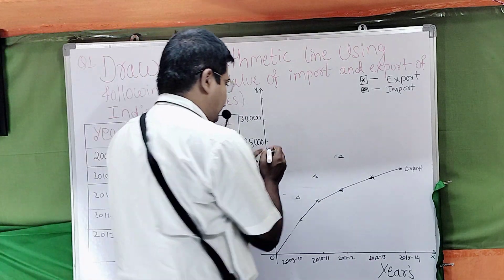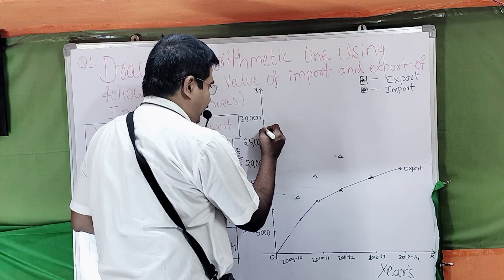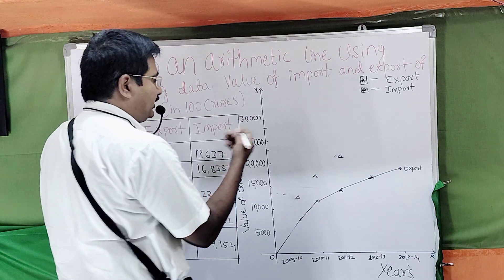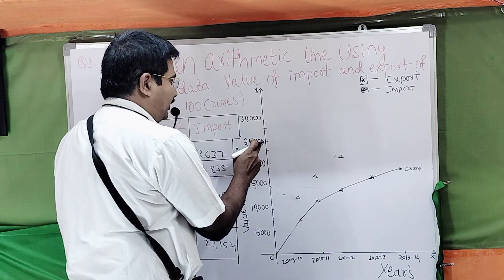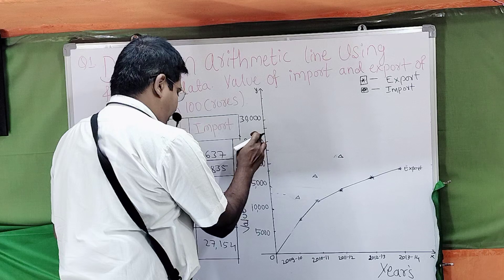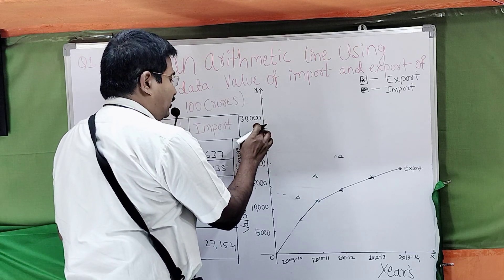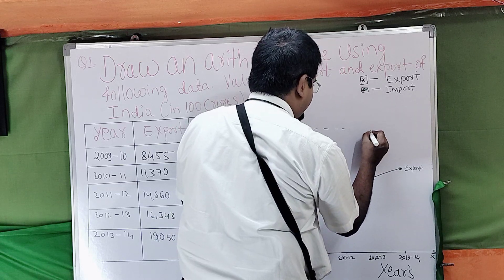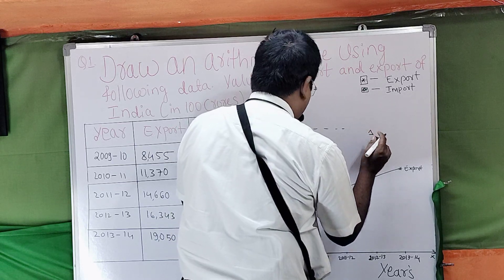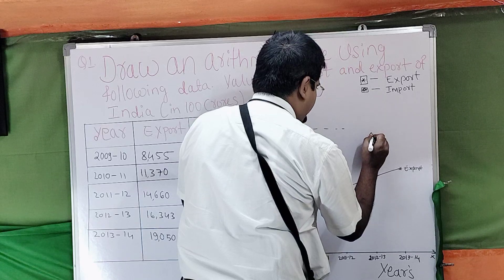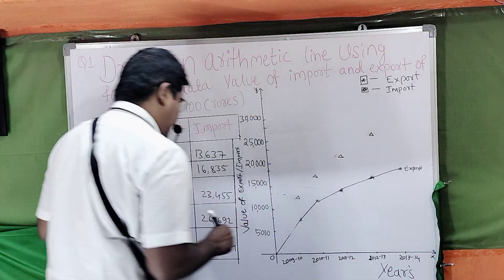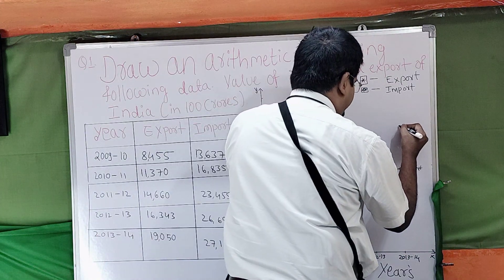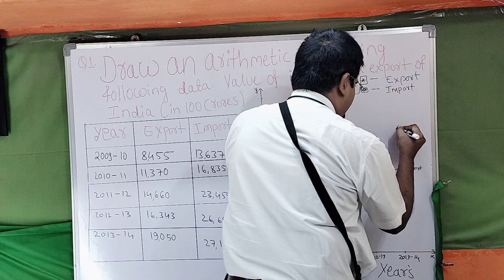Then 26, dear students. Then 27, 27.5. So that means it came for in this line. Last one finally, 27,154, dear students — nearest — so 27, it means it came for in this type. This is one point up.